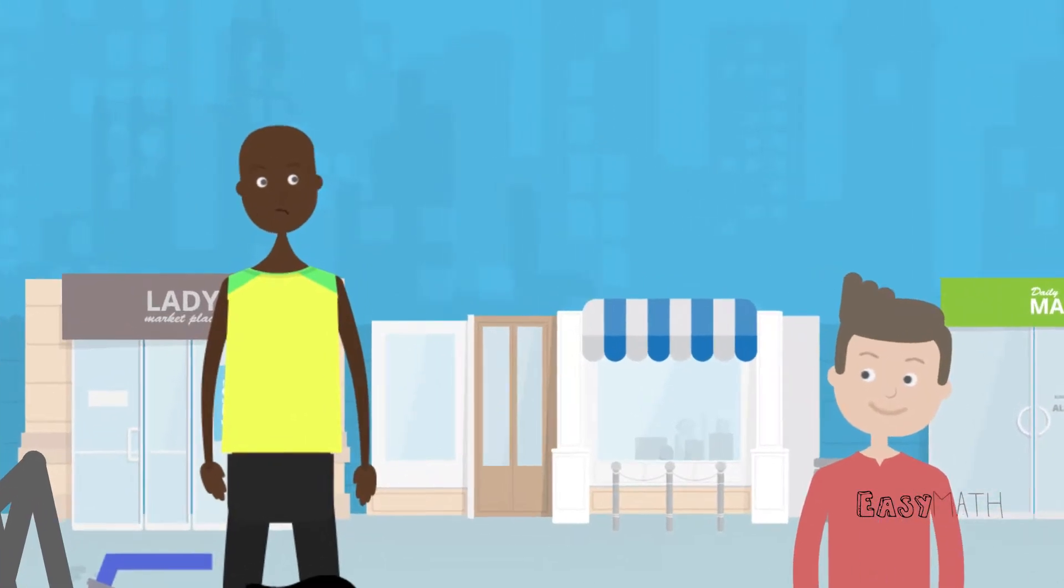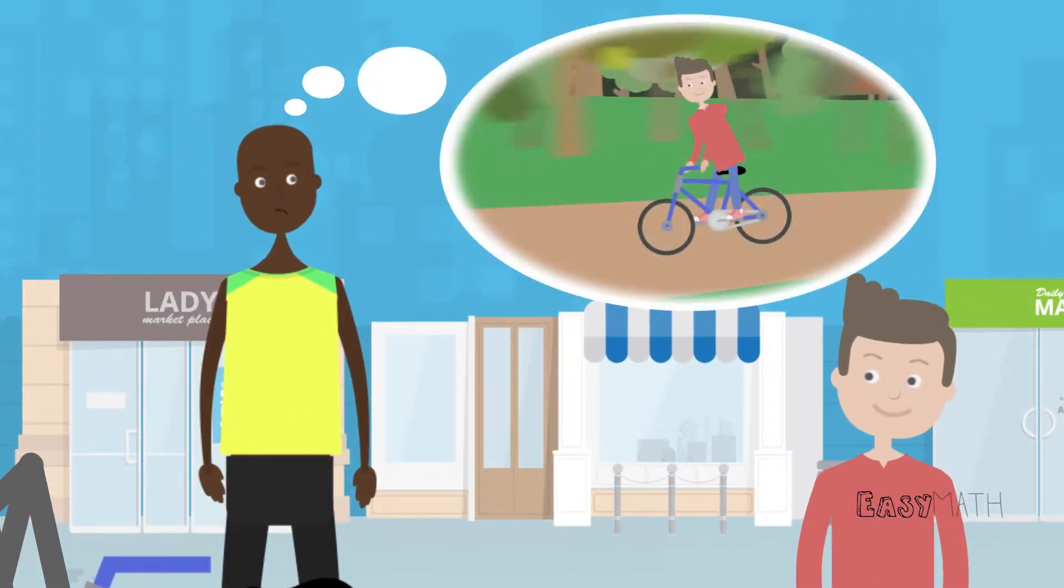However, Jusane does not want to loan Harry his bike because Harry is hyper, clumsy, and quite destructive.